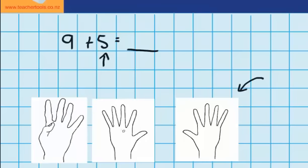Well I can see that these fingers make 10 and four more, so that's 14. 9 plus 5 equals 14.